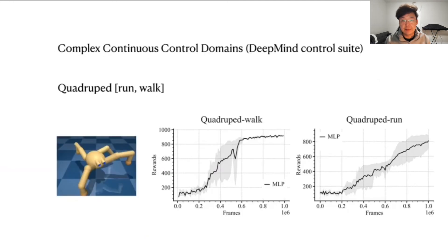And this is a challenging domain for the multilayer perceptron baseline. Fourier feature networks improve the sample efficiency and asymptotic performance via better value approximation.